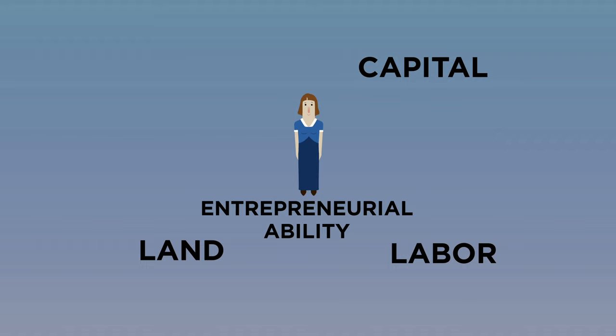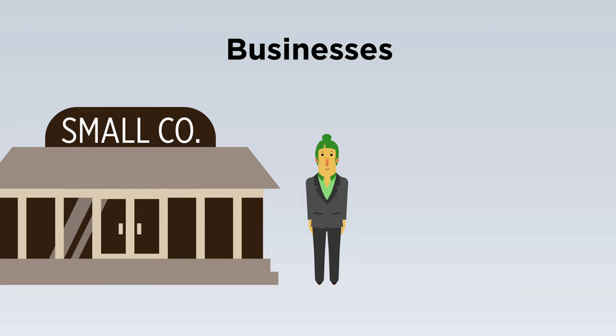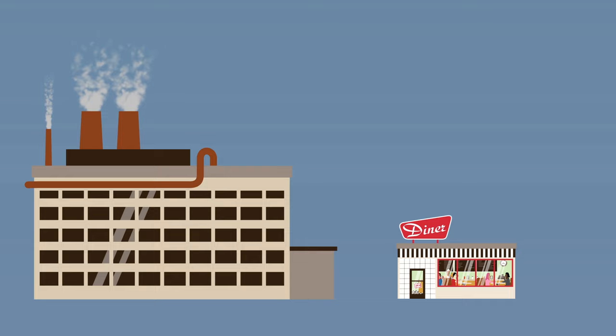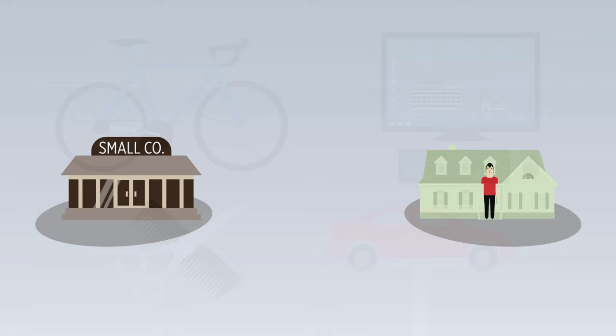On the other side, we have businesses. A business is a privately owned organization that produces goods and services and then sells them. Businesses can be large, such as an automobile manufacturer, or small, such as a diner. Businesses may produce goods such as computers and bicycles, and services such as haircuts and car repairs.